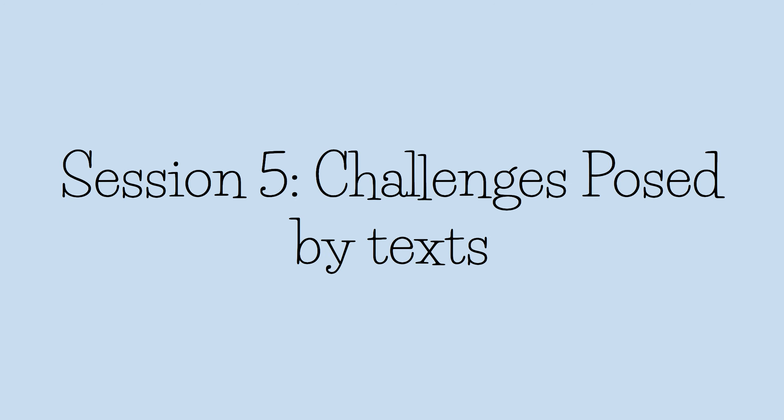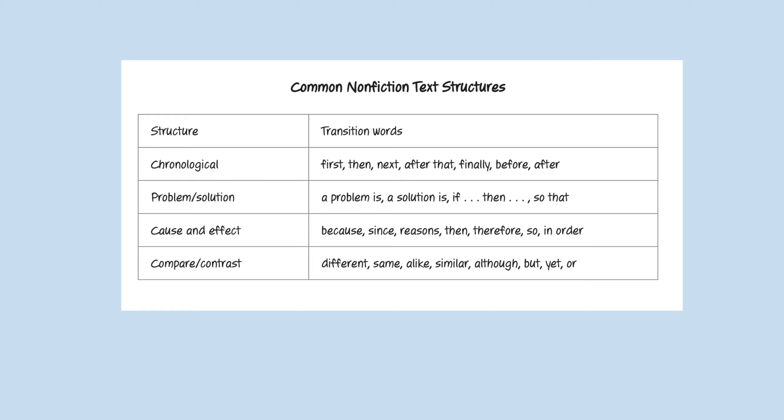We are continuing our study on nonfiction, and today we are on session five. We're going to be talking about challenges that we face with different nonfiction texts. A few days ago, we spent time exploring the various structures that nonfiction can take, and we talked about how knowing these structures can help a reader determine what information is most important. Remember how much easier it was to take notes on that Arabian Oryx news clip when we realized it followed a problem-solution structure? You can always refer to the common nonfiction text structures that you have in front of you if you need a reminder.